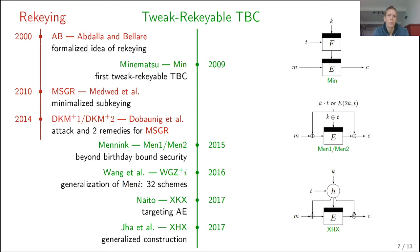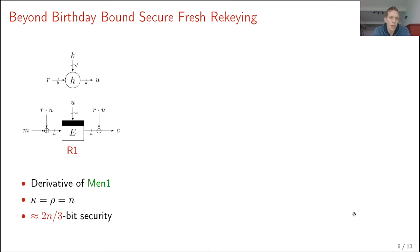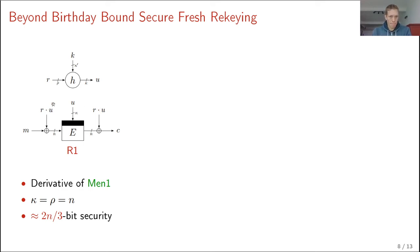Three solutions based on tweak-rekeyable tweakable block ciphers are presented. The first, R1, is a derivative of Men1. It takes a block cipher, derives the subkey using a universal hash function U, and then multiplies U with the re-keyer R. It requires that kappa (the key size) equals the re-keyer size equals the block size n, and in this case achieves 2n/3-bit security.